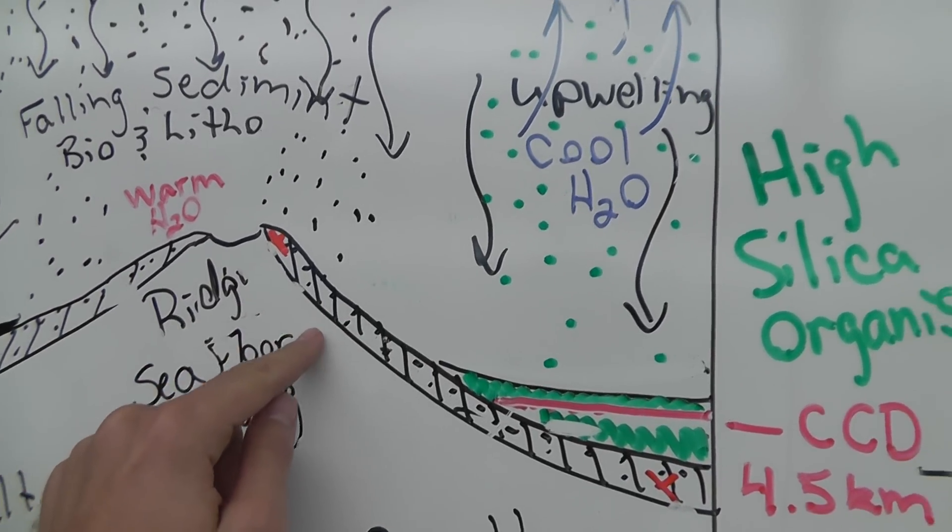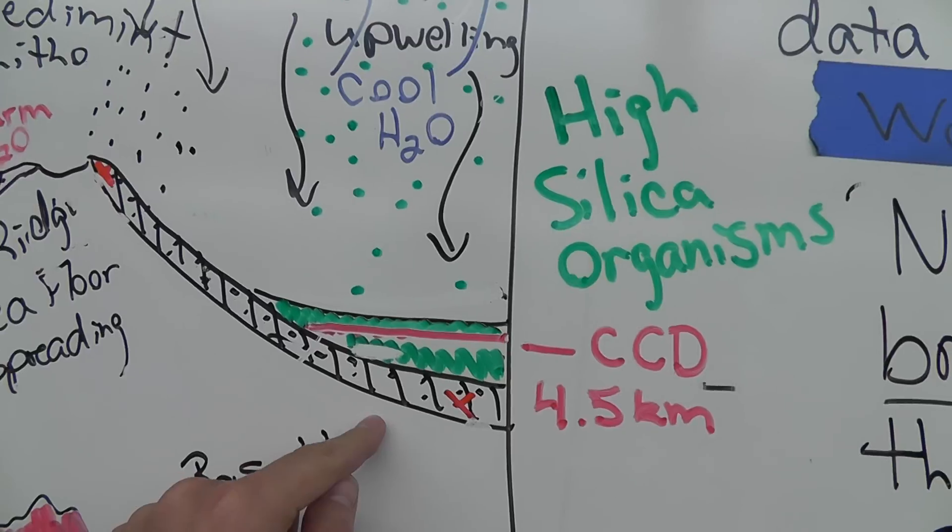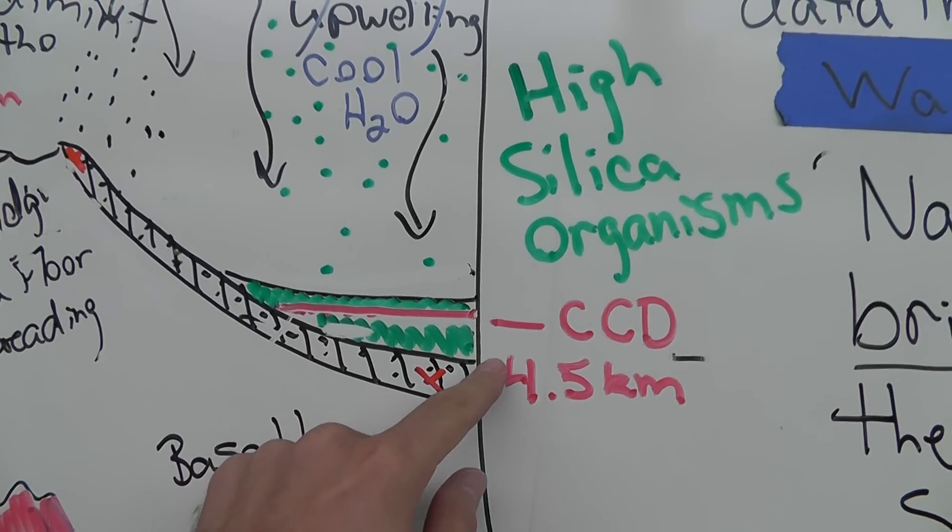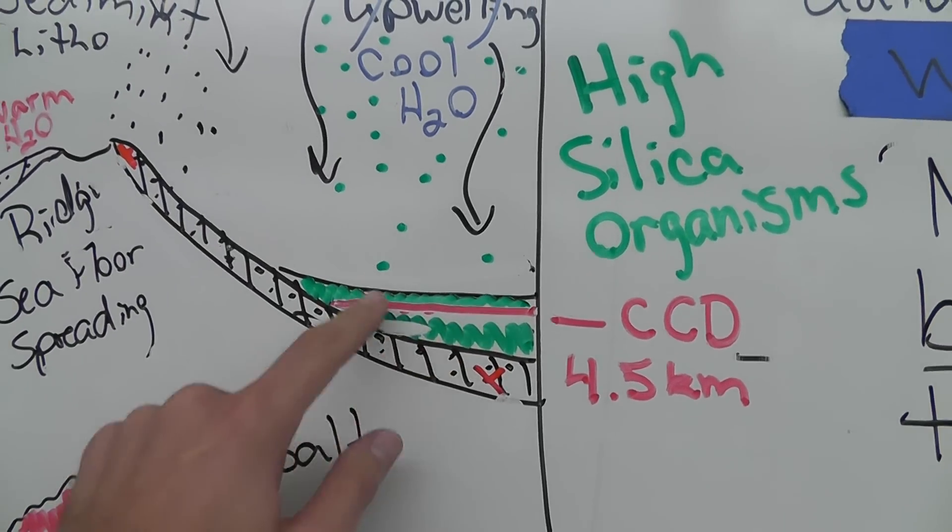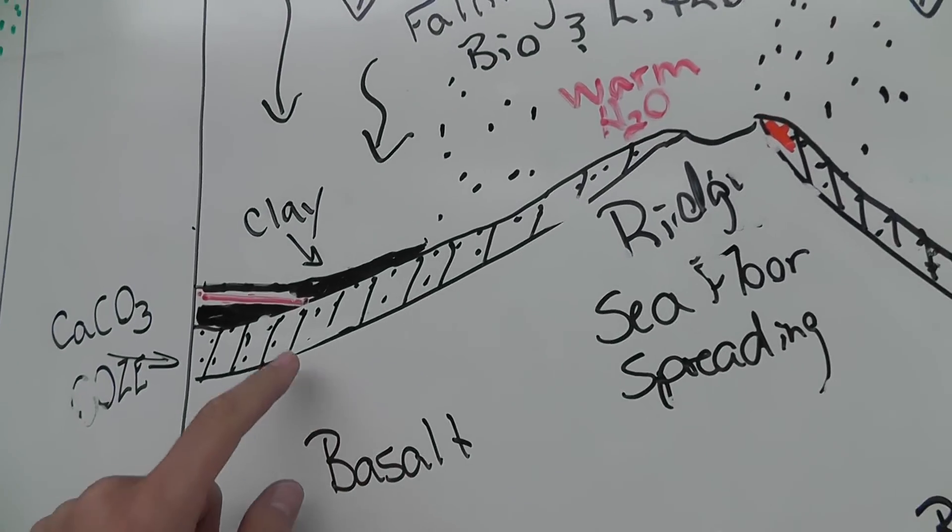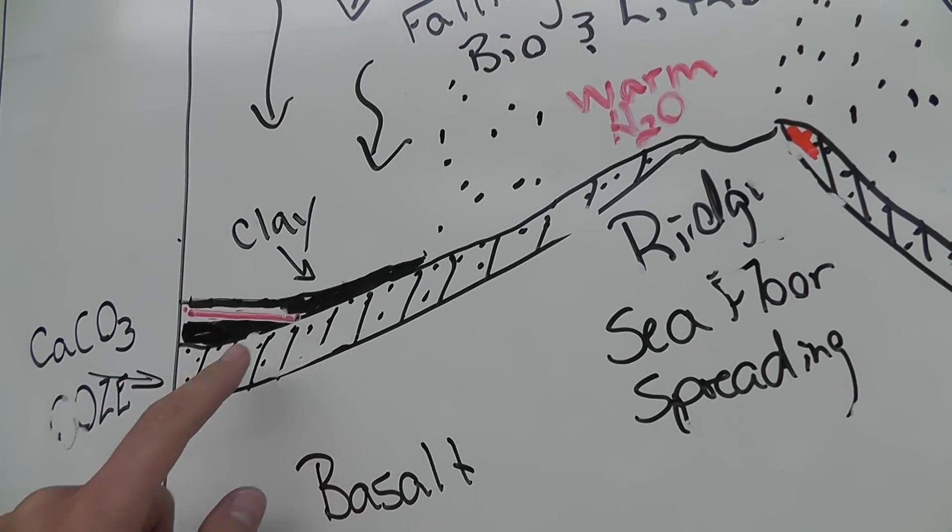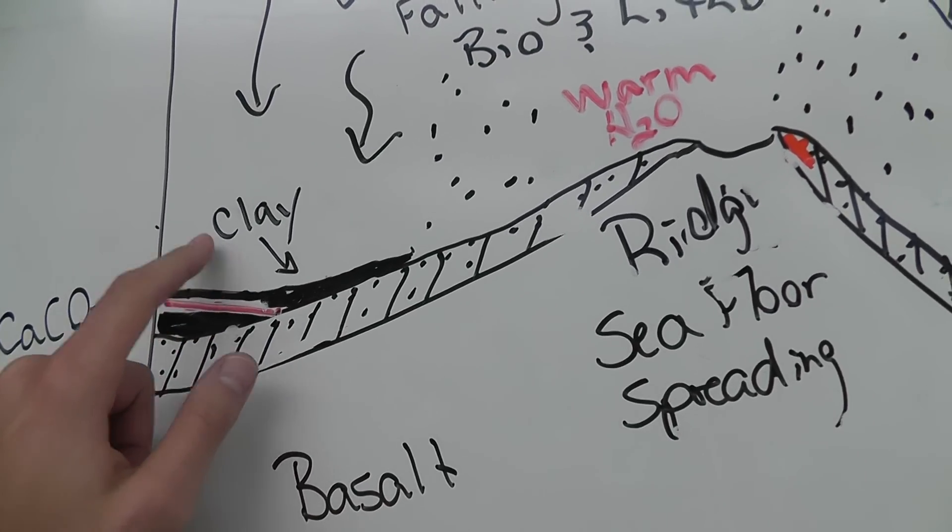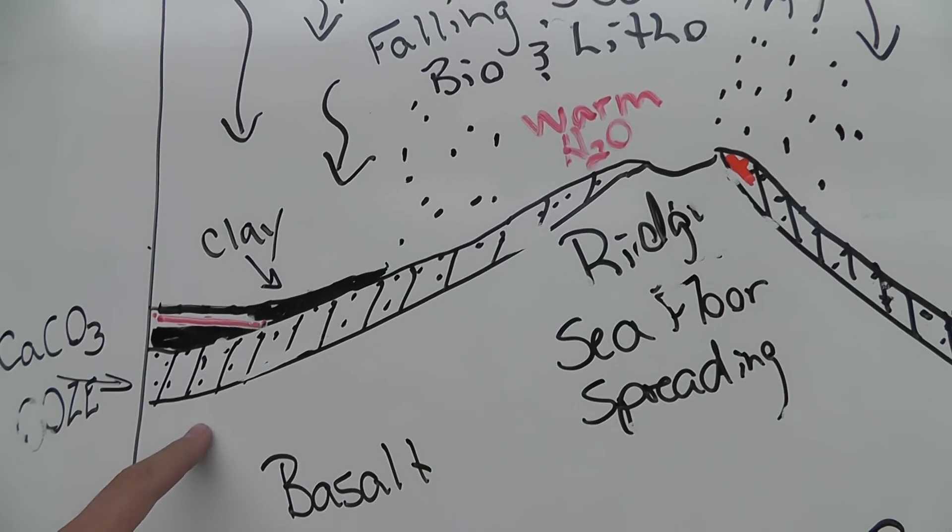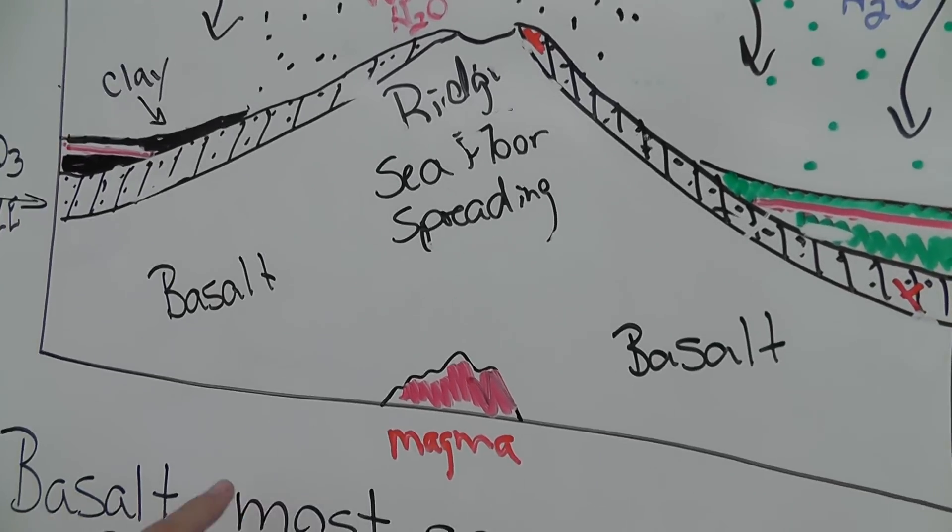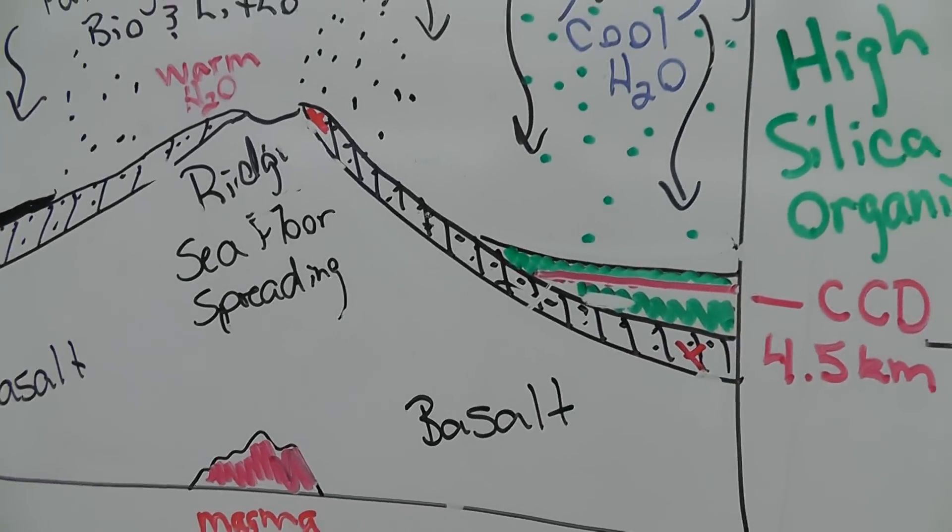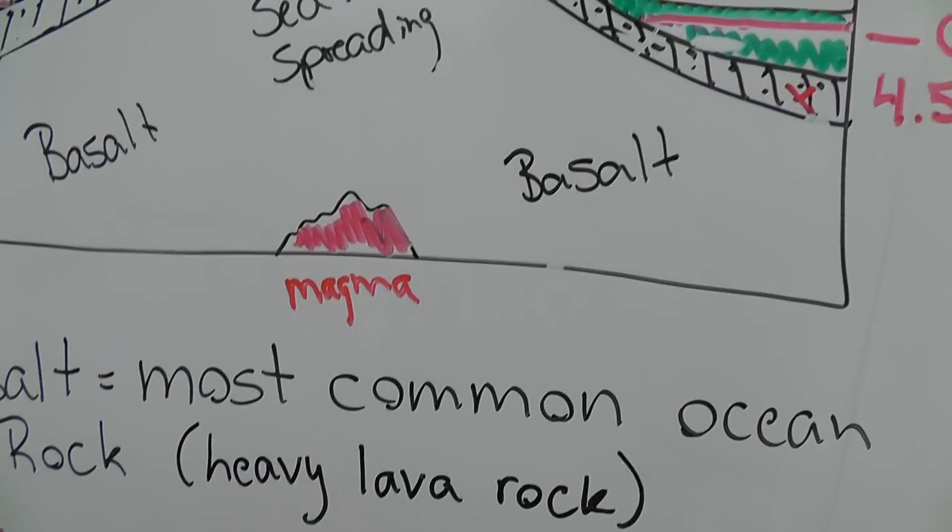So this red X will eventually move over here to an area that is below the calcite compensation depth because it's encased underneath the silica or it's encased underneath the clay or other sediment. And it's closed off from the water above it so it's able to make it below the calcite compensation depth. And again we have basalt which is the most common heavy lava rock.